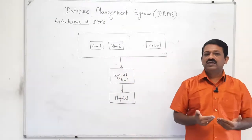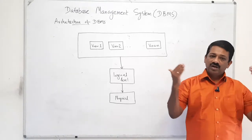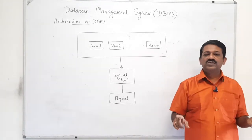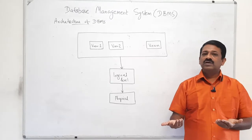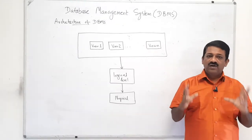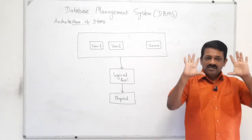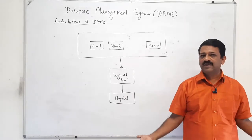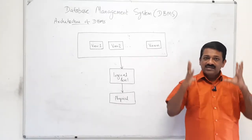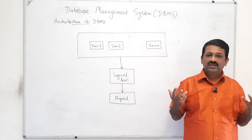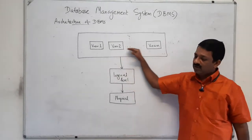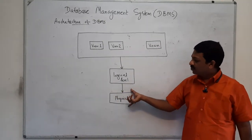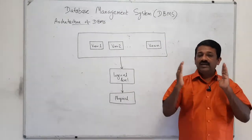Another example: if you are browsing your KTU portal, you are an end user and you want to know some details about yourself or about KTU. What you see is actually a view — the data is physically stored in different formats and different tables. As a user you want to know something specific, and that is called the view level.